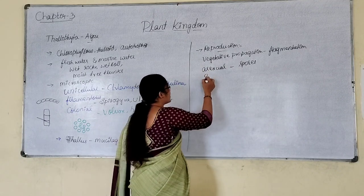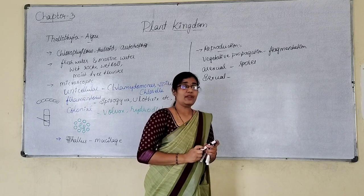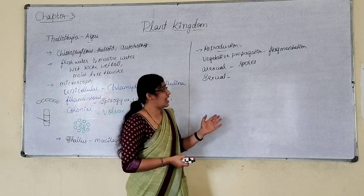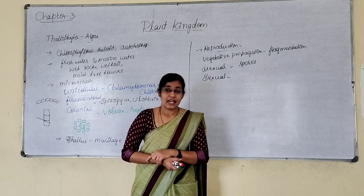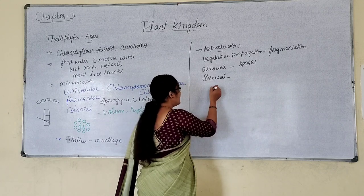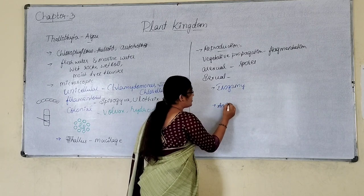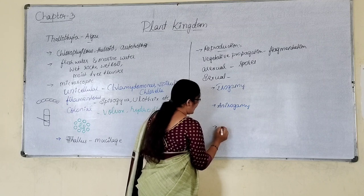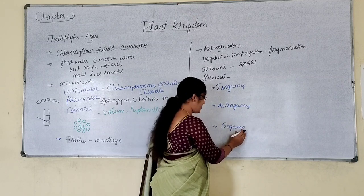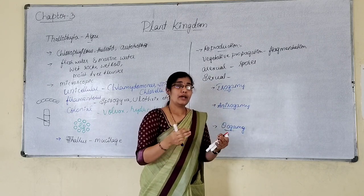Sexual reproduction is also seen in algae, or thallophyta. Sexual reproduction is the fusion of male and female gametes. Sexual reproduction takes place in three types: isogamy, anisogamy, and oogamy. The sexual reproduction takes place by the fusion of male and female gametes.